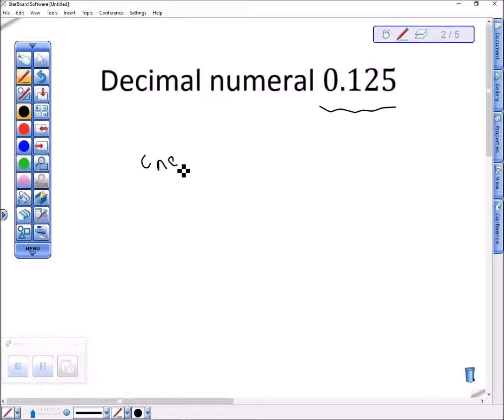This is 125, and then I need to find this place, right? So tenths, hundredths, thousandths.